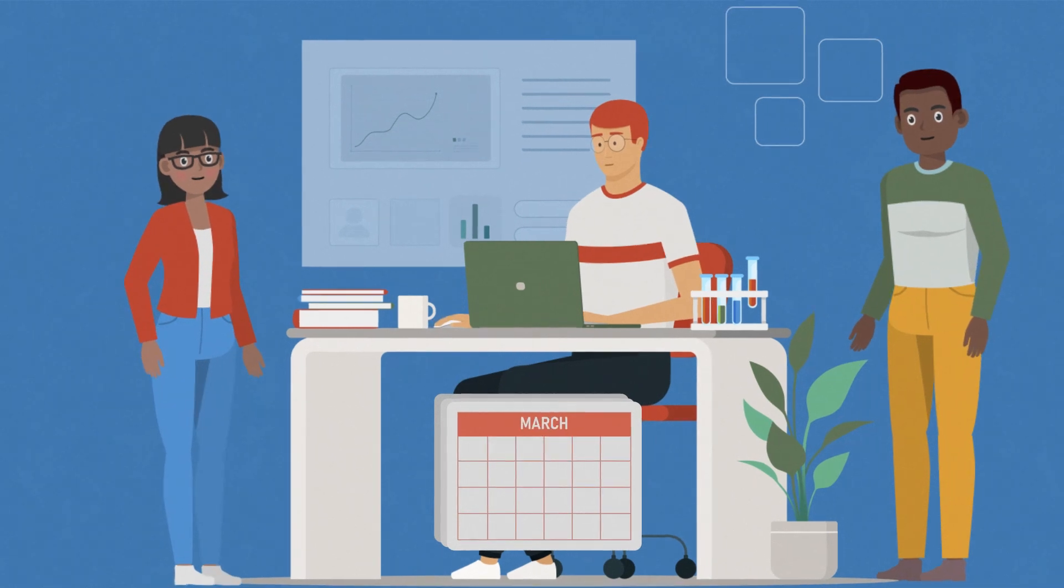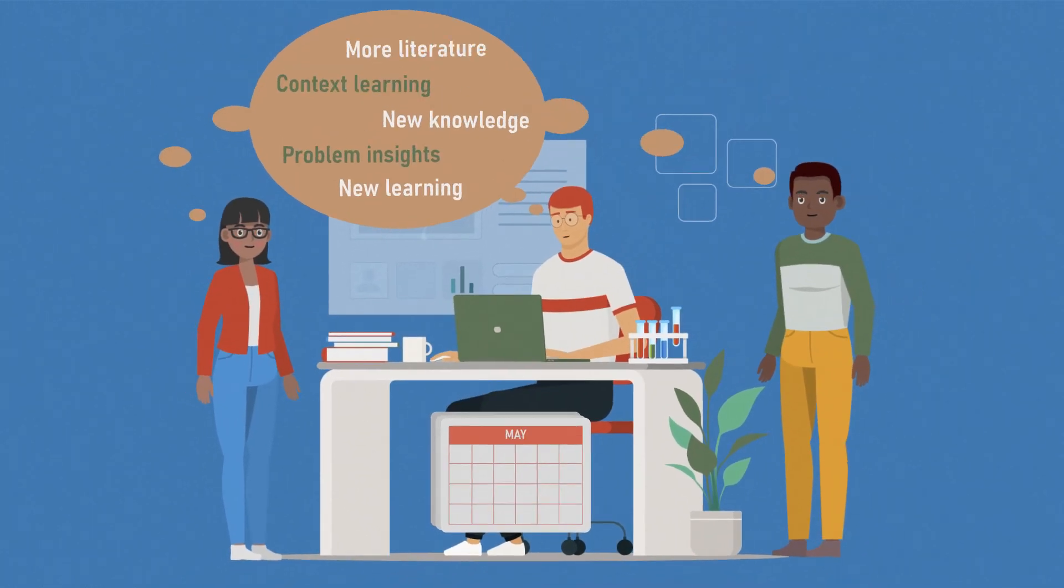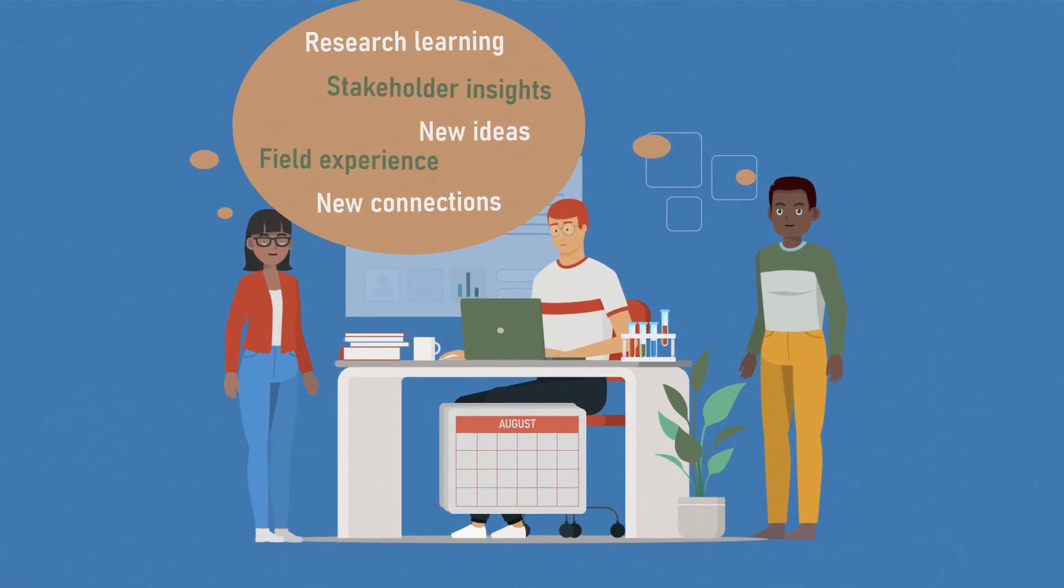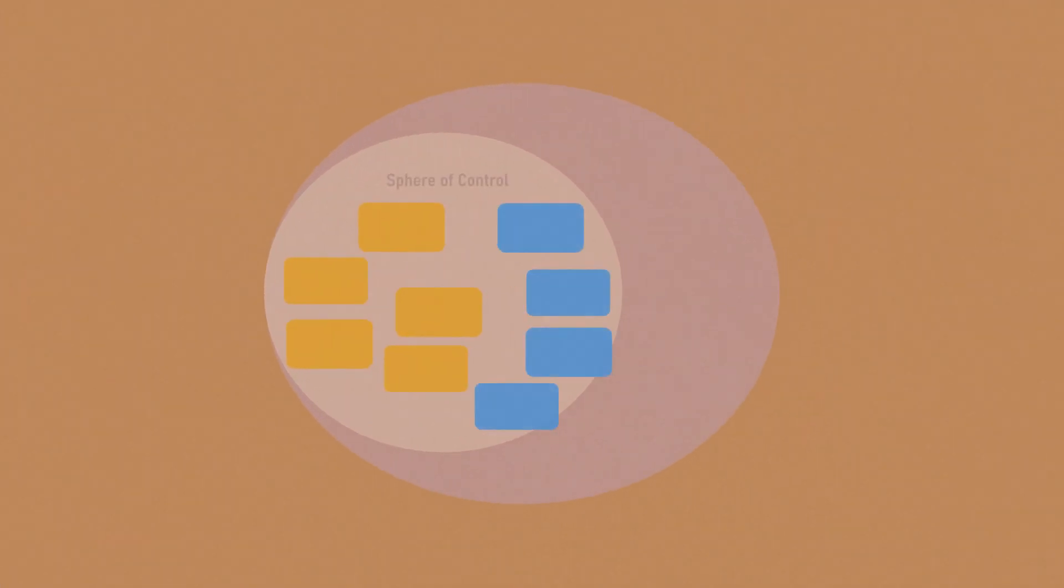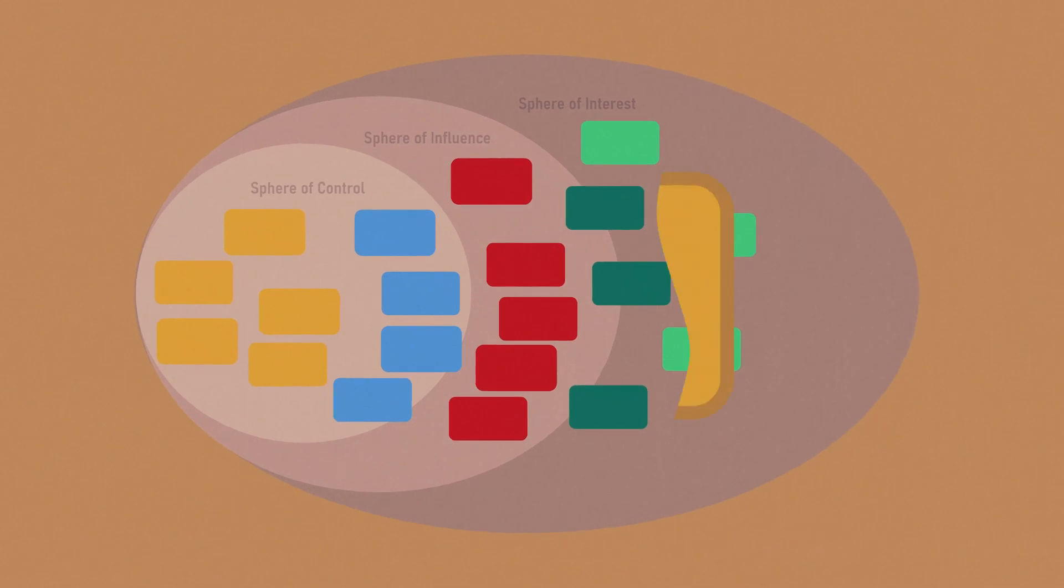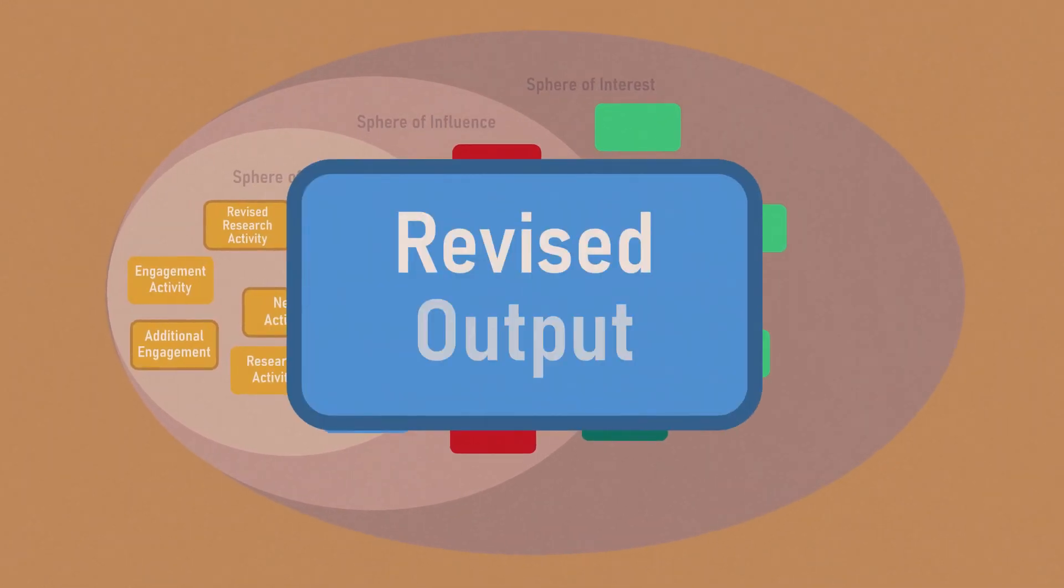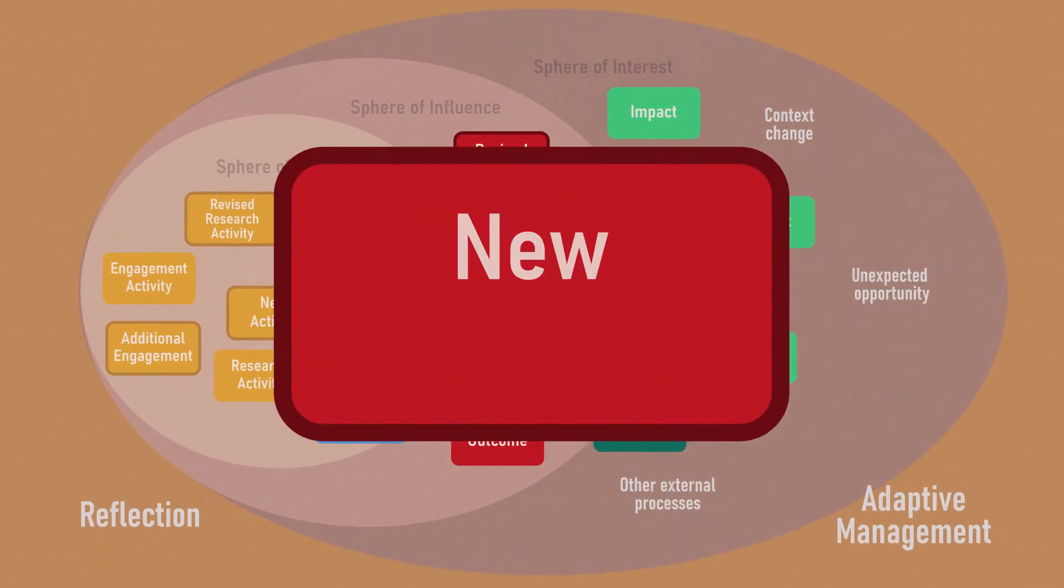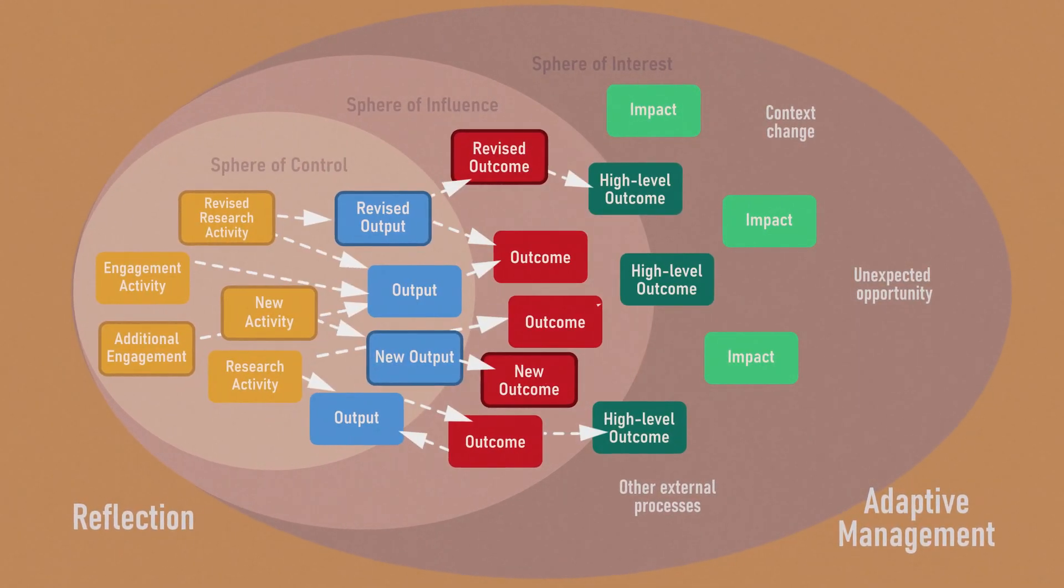Similarly, as the research advances, you learn more about the research problem and context and make adjustments accordingly. Your theory of change can help you keep track of these changes. Periodically reviewing and revising the theory of change supports reflection and adaptive management, ensuring your research strategy is as effective as it can be.